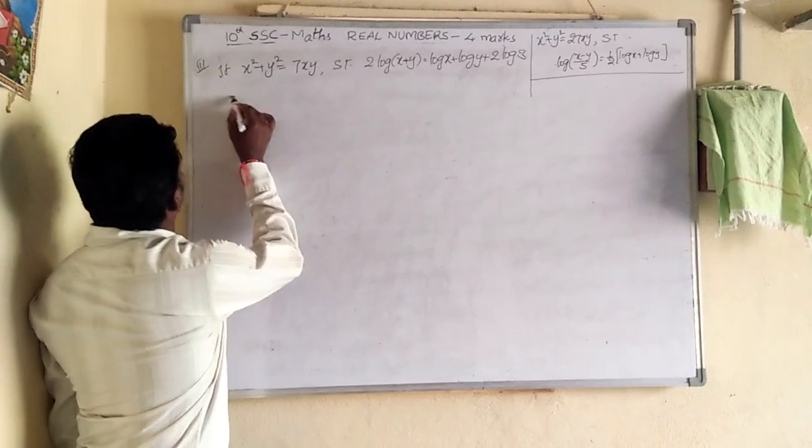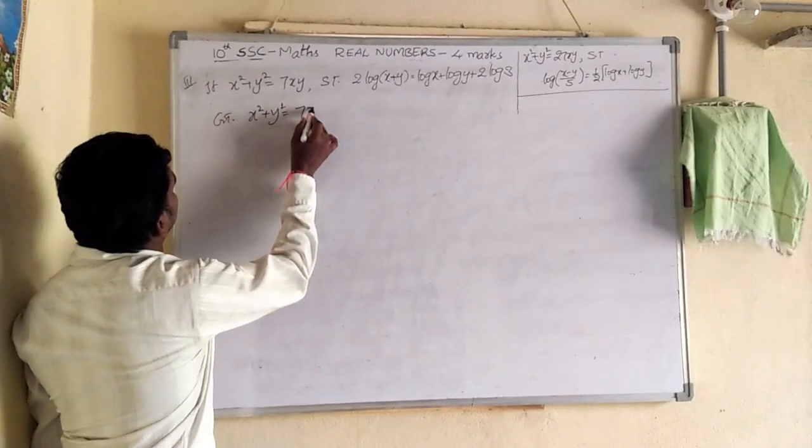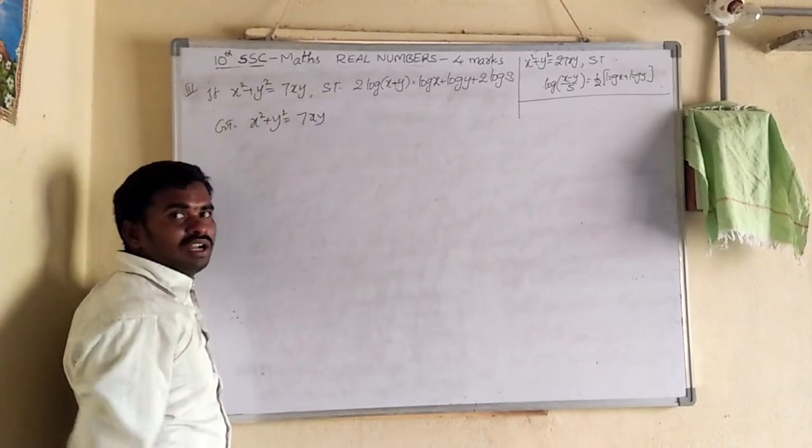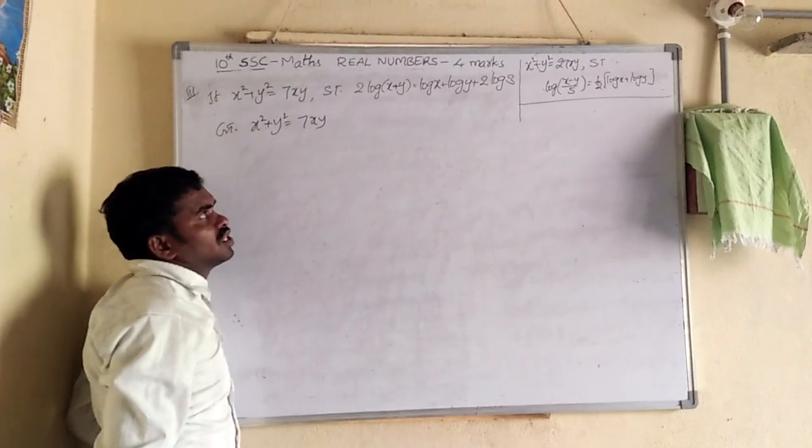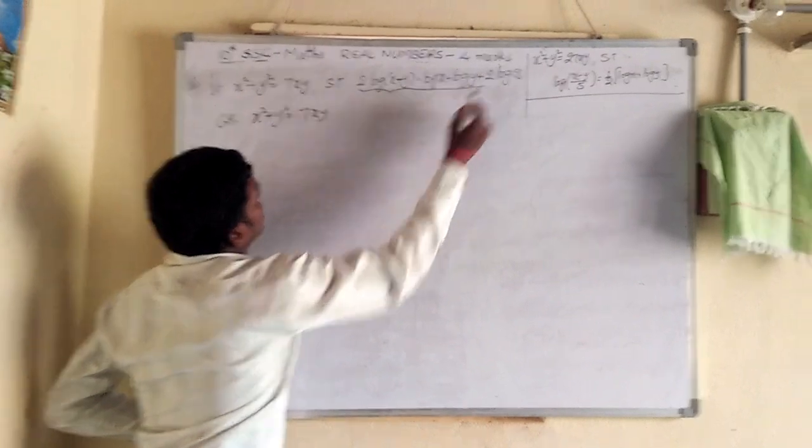Given that x square plus y square equals 7xy is given, and we have to show that 2 into log of x plus y equal log x plus log y plus 2log3. So this we have to prove.